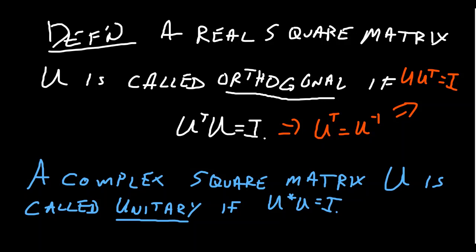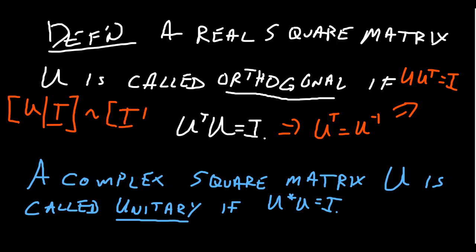You can see why someone might be interested in orthogonal matrices. To find the inverse of a non-singular matrix U, you'd augment it with the identity and row-reduce until U becomes the identity — that's an expensive procedure. But in comparison, taking the transpose is essentially free in terms of complexity, so finding the inverse of an orthogonal matrix is a cinch, assuming you have one.